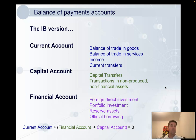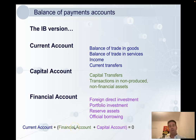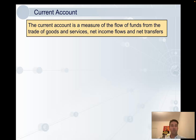We call it the balance of payments, so there must be a balance in here. What happens is that the current account plus the financial account and capital account is equal to zero. We'll get back to that later. So we'll go through all the components, starting with the current account. Here's our definition: a measure of the flow of funds from the trade of goods and services, net income flows, and net transfers.